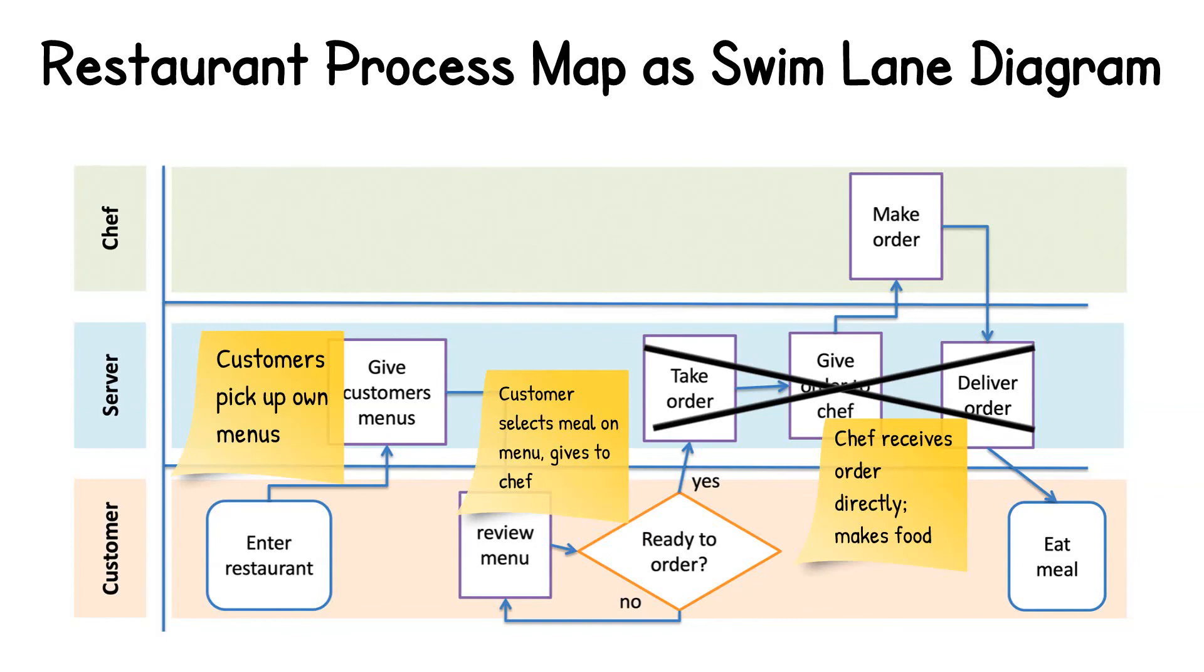In the new process, customers can pick up their own menus, select their meal on a paper menu, hand their order directly to a chef in the kitchen, and the order can be prepared right away. You can also use post-it notes to further document factors that contribute to poor outcomes like we will be doing in the postpartum hemorrhage scenario and activity.